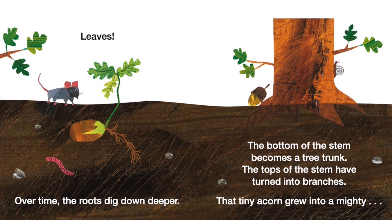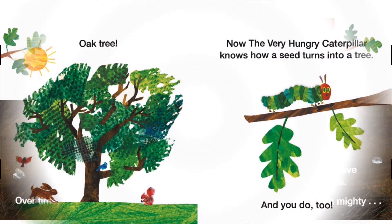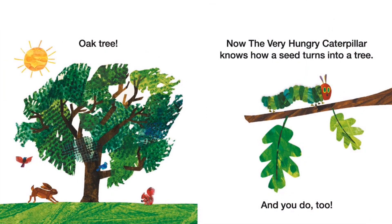Yeah, leaves! Over time, the roots dig down deeper. The bottom of the stem becomes a tree trunk. The tops of the stem have turned into branches. That tiny acorn grew into a mighty oak tree! Now the Very Hungry Caterpillar knows how a seed turns into a tree — and you do too.